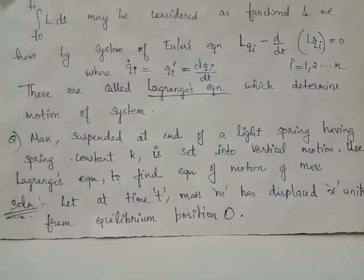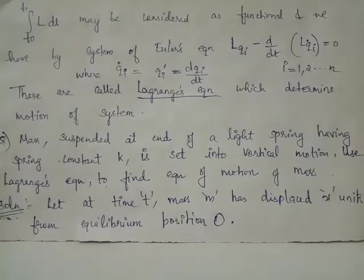Here's a problem: a mass suspended at the end of a light spring having spring constant k is set into vertical motion. Use Lagrange's equation to find the equation of motion of the mass. We are given that mass m has moved from equilibrium position vertically, and we have to find the equation of motion using Lagrange's equation. Let's look at the solution.